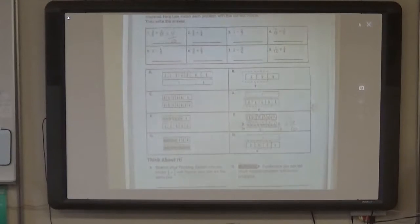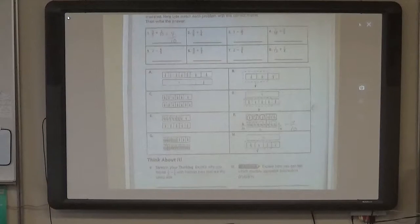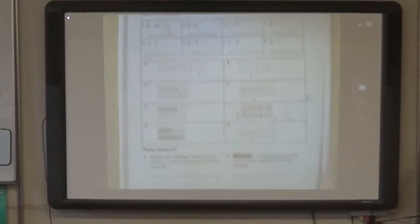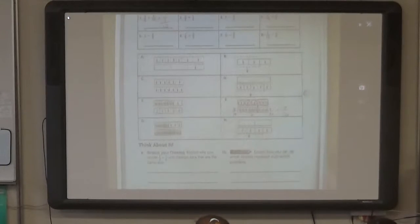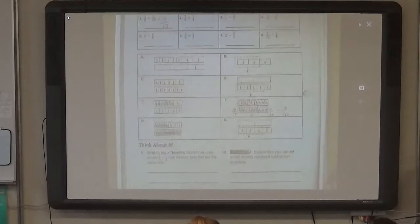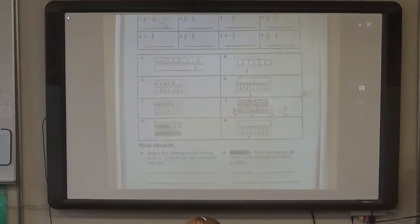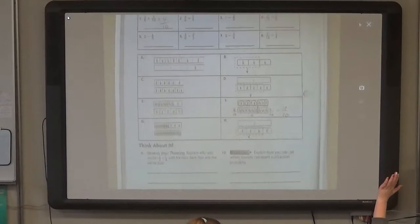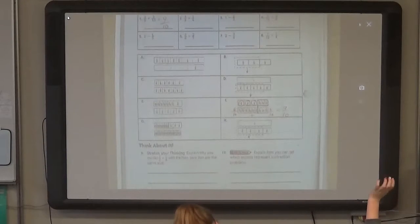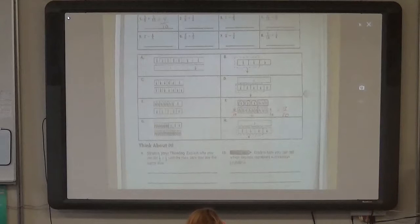So what I want you to do for each of these is to draw on the model like I'm doing, and write down the numbers. Next one. Let's do number two together. Five-eighths plus one-fourth. Which model could we use to help us with five-eighths plus one-fourth? Sophie? C.